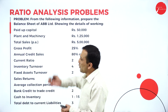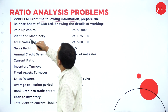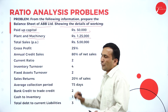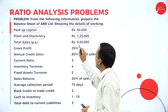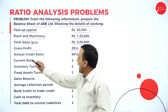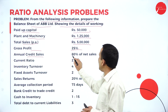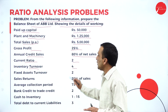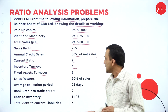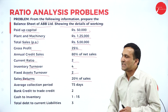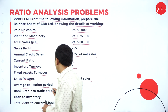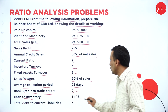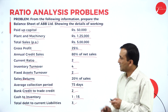Moving to a second question: from the following information, prepare the balance sheet of ABP Limited and show details of working. Paid-up capital is 50,000; plant and machinery is 1,25,000; total sales per annum is 5 lakhs; gross profit percentage is 25%; annual credit sales are 80% of net sales; current ratio is 2; inventory turnover is 4; fixed asset turnover is 2; sales return is 20% of sales; and average collection period is 73 days. Bank credit to trade credit ratio is 2; cash to inventory is 1:15; and total debts to current liability ratio is 3.